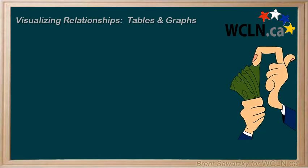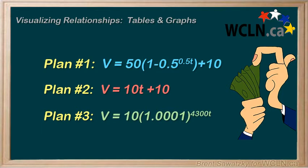For example, let's say you were looking to invest some money. Here are equations that compare three investment opportunities. V is the value of the investment, while T is the number of years in the investment. So which one would you choose?